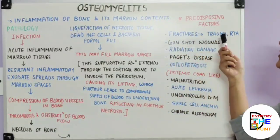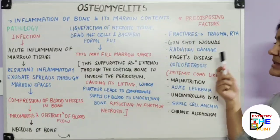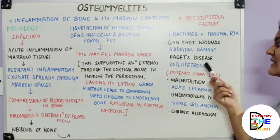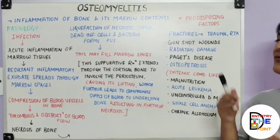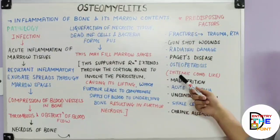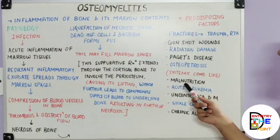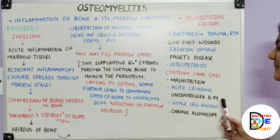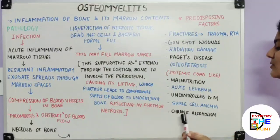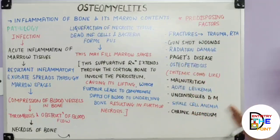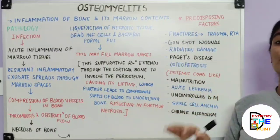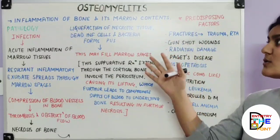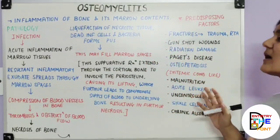Moving on to the predisposing factors: fractures due to trauma or road traffic accidents, gunshot wounds, radiation damage, Paget's disease, osteopetrosis, and systemic conditions like malnutrition, acute leukemia, uncontrolled diabetes mellitus, sickle cell anemia, and chronic alcoholism.